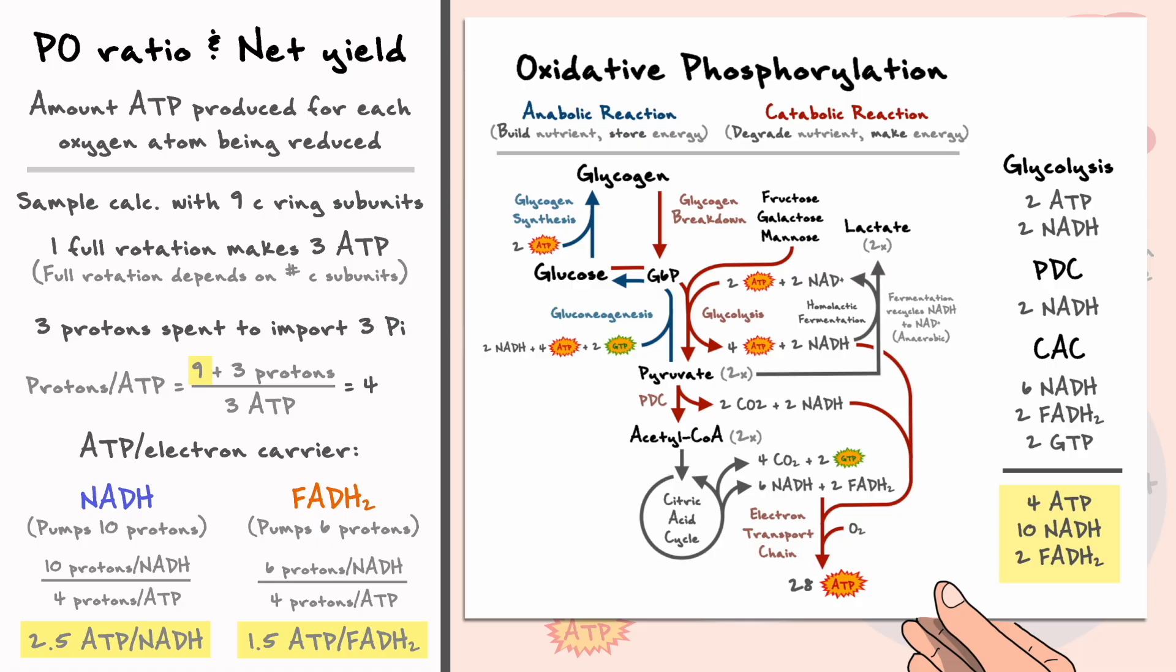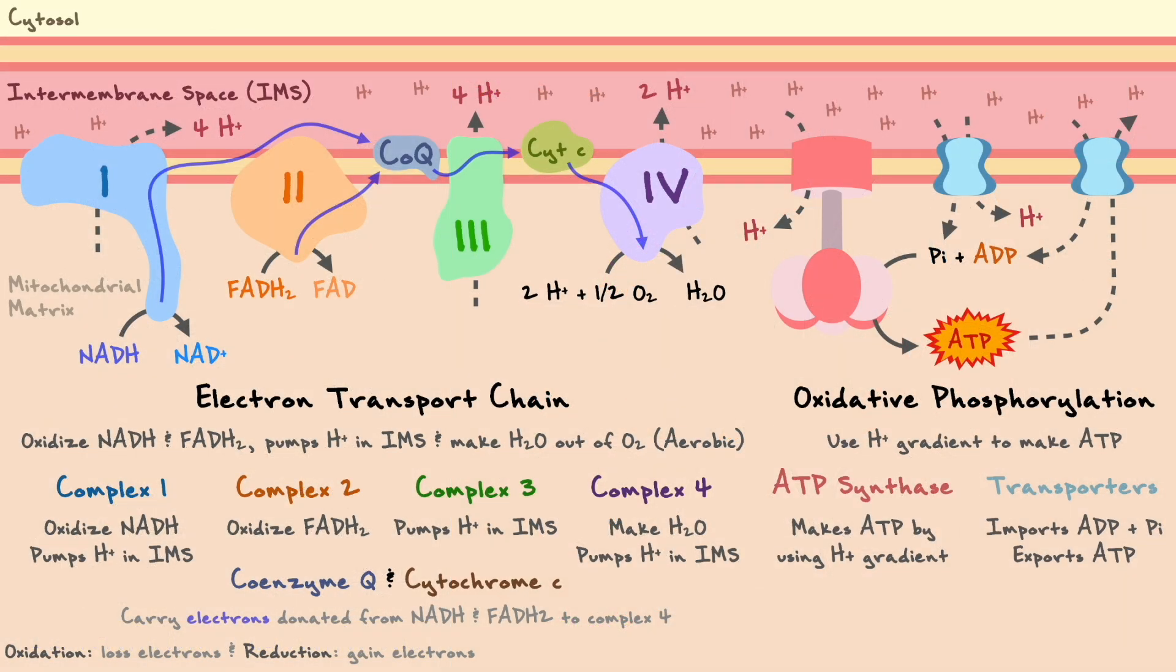With the ATP made during glycolysis and the citric acid cycle, 32 ATPs in total can be extracted from glucose. Back to this overview, we have now covered both the electron transport chain and oxidative phosphorylation. The last aspect about this entire process that I want to briefly touch on is the regulation of it all.